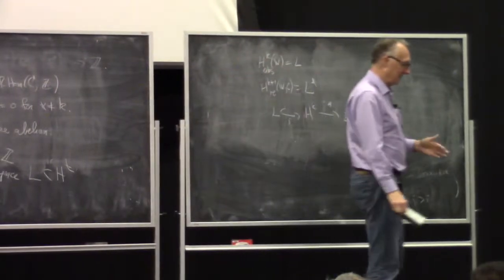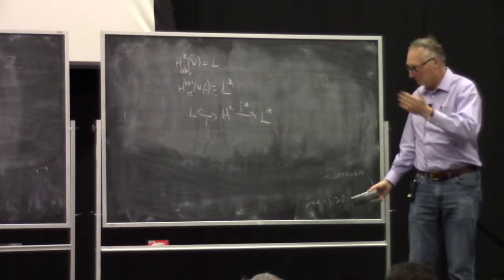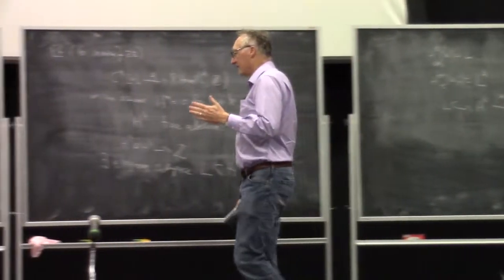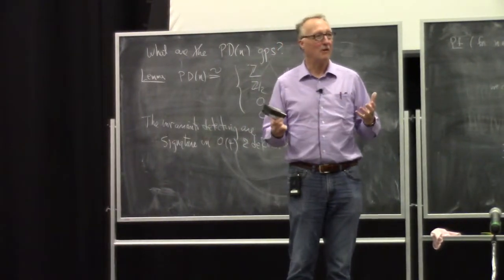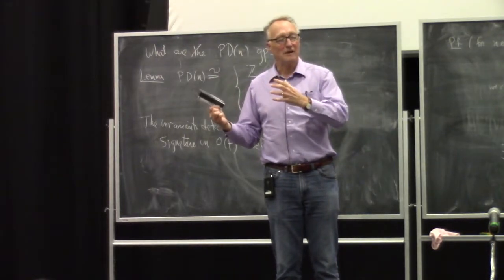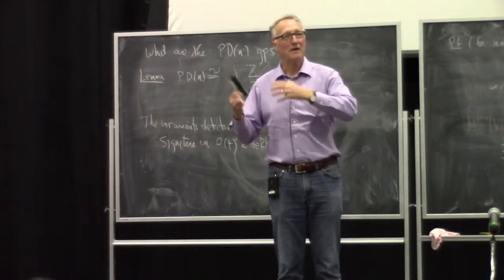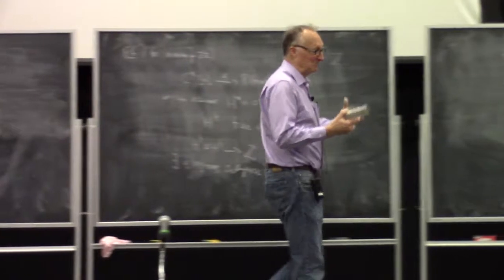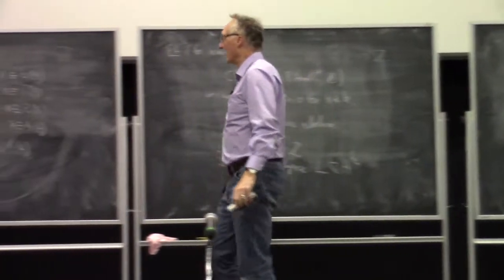Very similar argument in the linking pairing case. For the Arf invariant: if it's zero, there's a Lagrangian subspace in the torsion pairing. Dimension 4K+3 is a little more interesting — there are lots of symmetric pairings on torsion groups, most without Lagrangian subspaces. But every such pairing is realized as the second cohomology of a closed 3-manifold, and all 3-manifolds bound. So you can vary your pairing by any pairing coming from a bounding 3-manifold, and a pairing plus its negative does have a Lagrangian subspace.